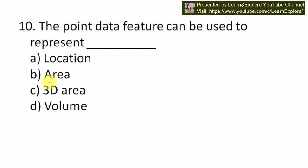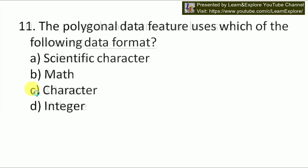Next question: the point data feature can be used to represent location, area, 3D area, or volume. Our answer will be A — the point data feature can be used to represent a location. Next question: the polygonal data feature uses which of the following data formats — scientific character, math character, or integer? The data formats generally used in GIS are integer, float, and text format. The polygonal data feature uses integer data format. Our answer is B.